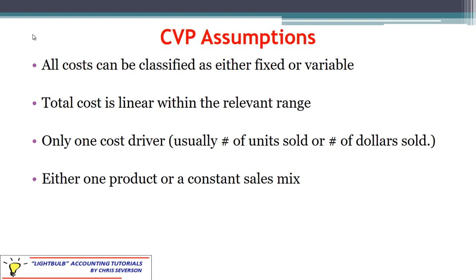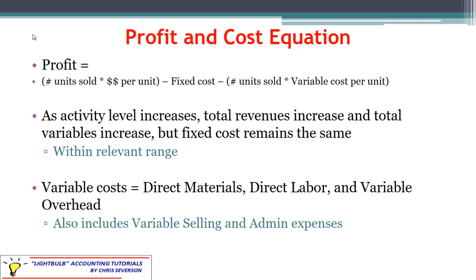The other assumption is that we either have only one product, or if we have multiple products, we have a sales mix that remains constant. How to deal with CVP when we have multiple products and a sales mix is something we'll cover in another lecture. To really understand CVP analysis, let's look at the profit equation. Total revenues are calculated by taking the number of units sold multiplied by the selling price per unit. We subtract out fixed costs and variable costs — the number of units sold multiplied by the variable cost per unit — giving us profit.